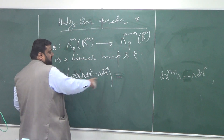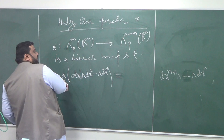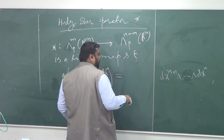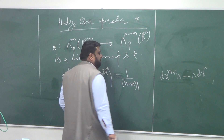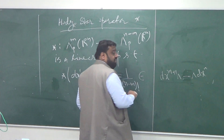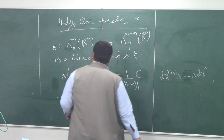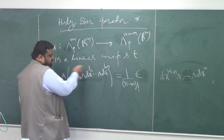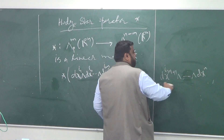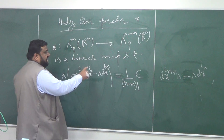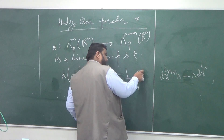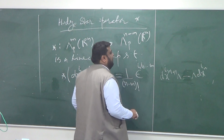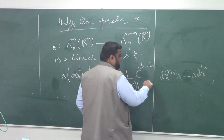So this is what we want. The definition of star is: if you take this M-form basis element, we are going to map it onto the complementary form with a certain coefficient. The coefficient is 1 over (N minus M) factorial, multiplied by the Levi-Civita symbol epsilon with indices I1, I2, ..., Im, Im+1, ..., IN, where all these indices can be anything from 1 to N.